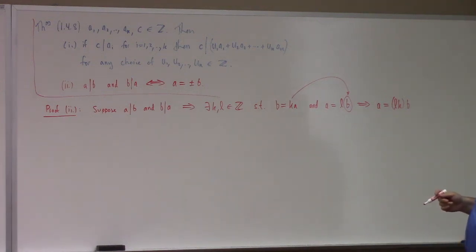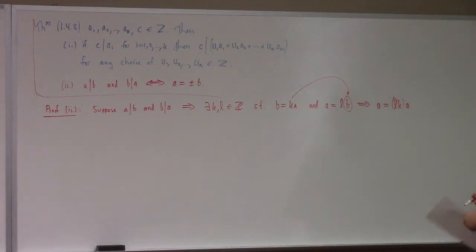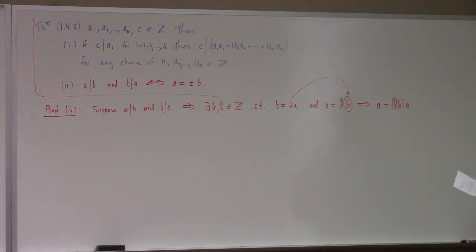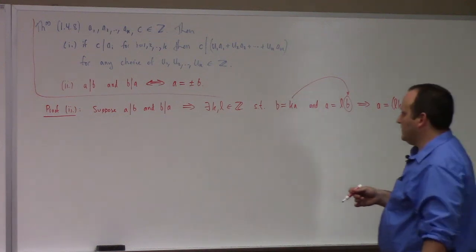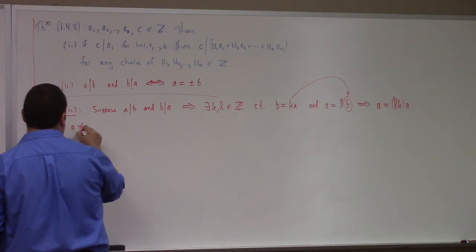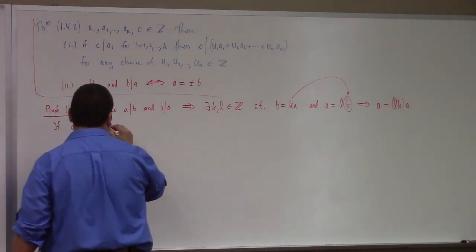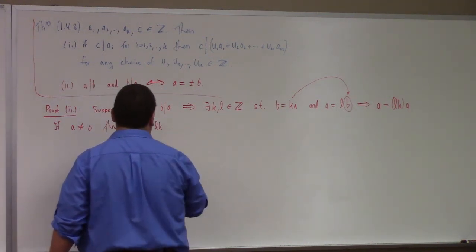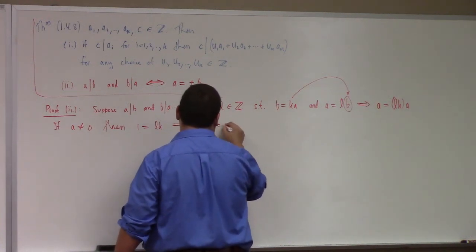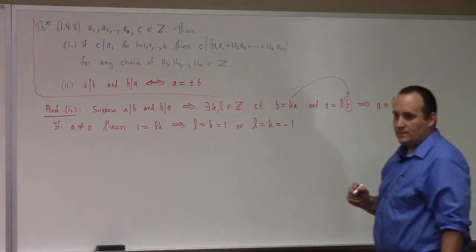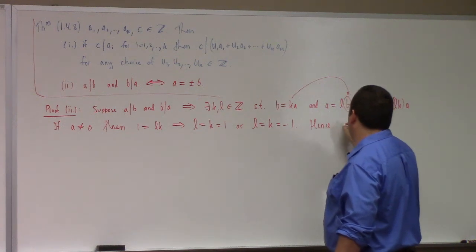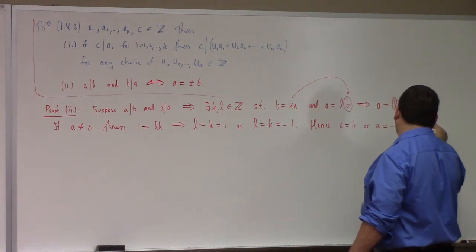Make the substitution: take b, plug in k·a for that, and that gives us a is equal to l·k·a. If a is not equal to 0, then we can divide by it, so 1 is equal to l·k, which implies that either l equals k equals 1, or l equals k equals −1. Hence, a is equal to b or a is equal to −b — therefore a is equal to plus or minus b.